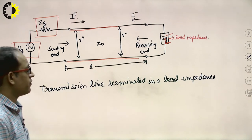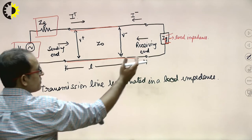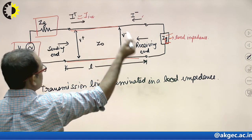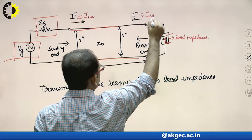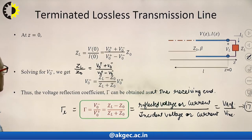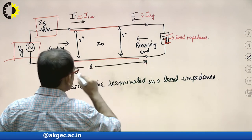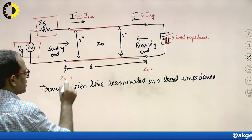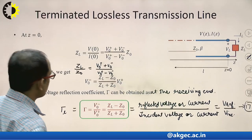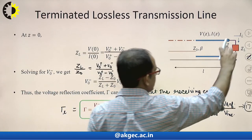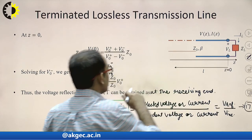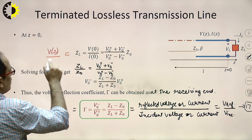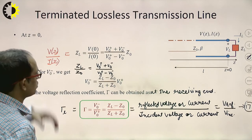The input current traveling toward the load is I+, and the reflected current traveling from the receiving end back to the source is I−, also known as the incident and reflected currents. At the load point z = 0 and at the source z = −l. To calculate ZL: ZL = V(z)/I(z), putting z = 0 gives ZL = V(0)/I(0).